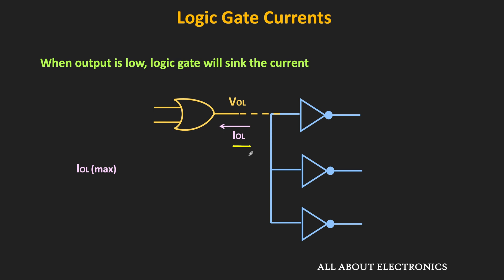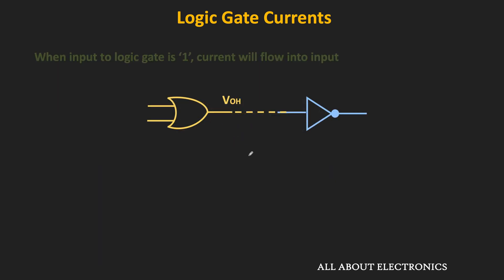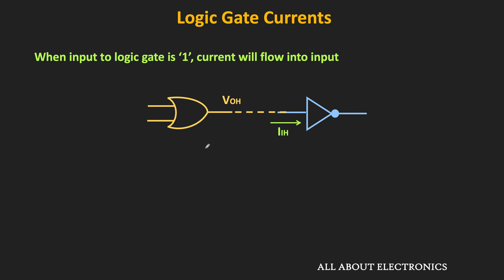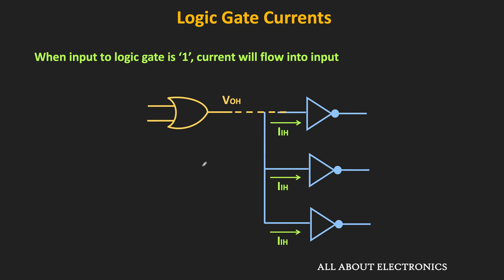IOH and IOL are the output currents of the logic gate. Similarly, we will also have two currents for the input side. When the input to the logic gate is 1, then some current will flow into the logic gate, and that current is known as IIH — that is the input current to the logic gate when the input is high. If more than one logic gate is connected at the output, then each gate will draw this IIH current, and this current will be supplied by the preceding stage. In this case, this current will be supplied by the output of the OR gate, so from the OR gate perspective, this current is the IOH current — it is the summation of these incoming currents.